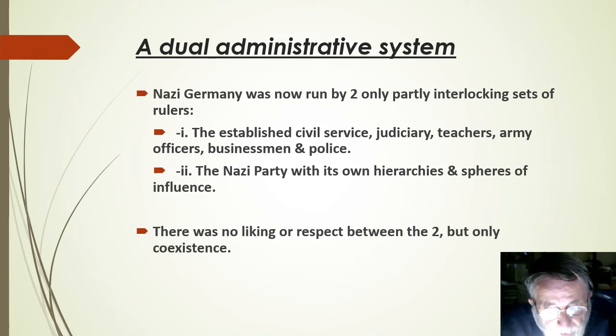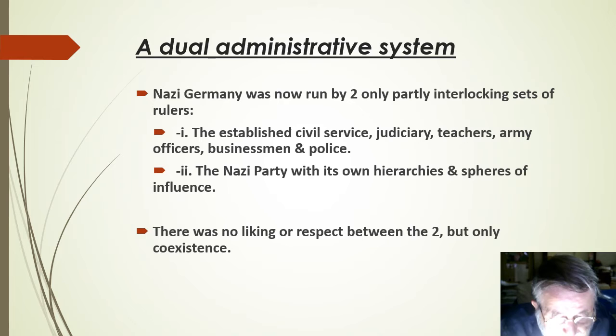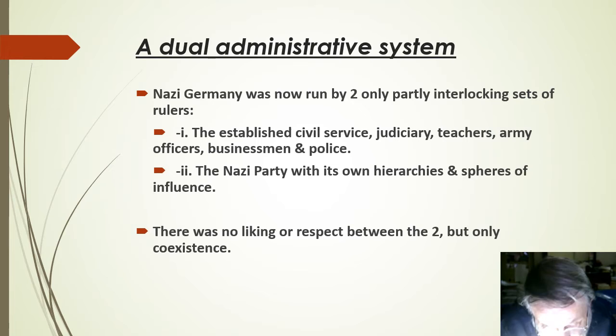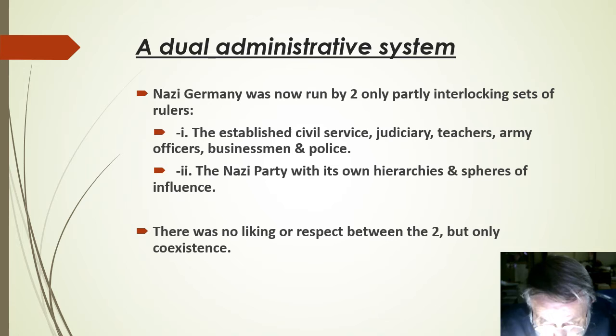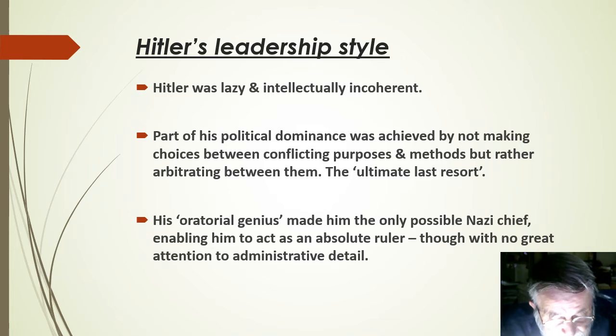Nazi Germany was now run by two only partly interlocking sets of rulers: on the one hand the established civil service, the judiciary, teachers, army officers, businessmen and the police; and on the other the Nazi party with its own hierarchies and spheres of influence. There was no liking or respect between the two, but only toleration. This dual system meant that the Third Reich was orderly, old-fashioned, conservatively honest and efficient in many areas of life, but with the presence of brutal, lawless, often corrupt and sometimes incompetent Nazi party mechanisms.